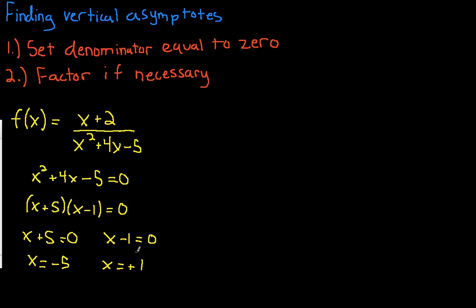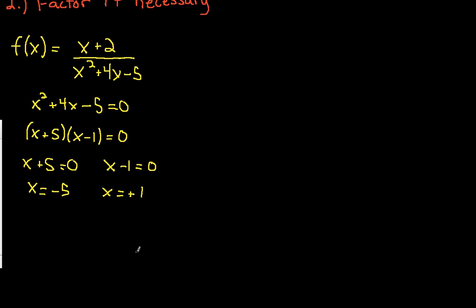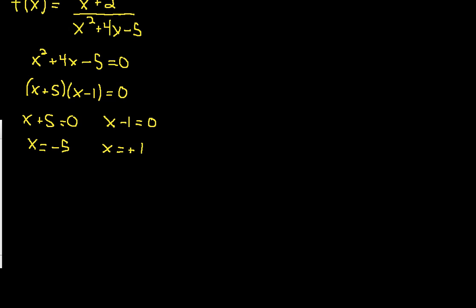Remember that x = −5 and x = 1 represent vertical lines — lines going straight up and down. At every point along such a line, the x value remains the same. Let me draw a coordinate plane to show you what I mean.